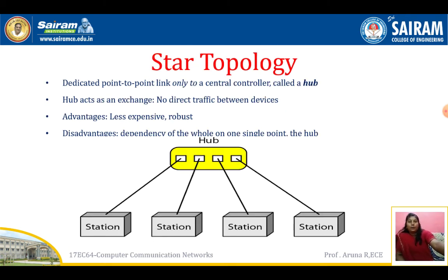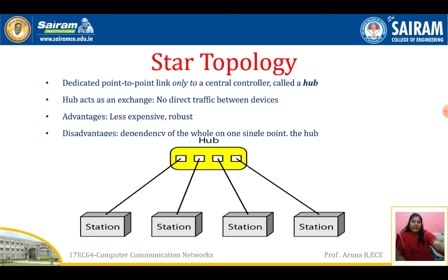Star topology has dedicated point-to-point links only to a central controller called a hub. The hub acts as an exchange with no direct traffic between devices. Advantages: less expensive, robust. Disadvantage: dependency on one single point — the hub. If the hub fails, everything fails. Every station must route communication through the hub to reach another station.